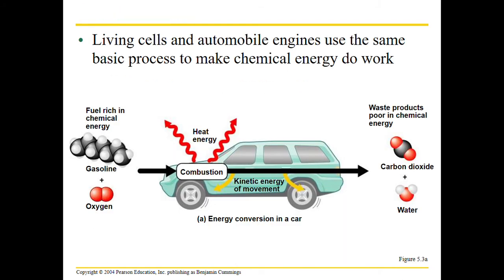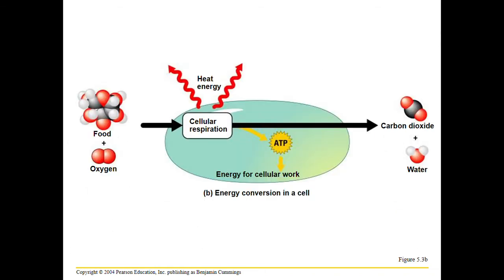To put this into daily life perspective: a car uses hydrocarbons through combustion to break them down, giving heat and kinetic energy to move the car, with waste products left over. With a cell it's the same idea — food molecules like sugars, fats, and proteins go through cellular respiration at the mitochondria, our powerhouse of the cell, and that's where we make ATP.